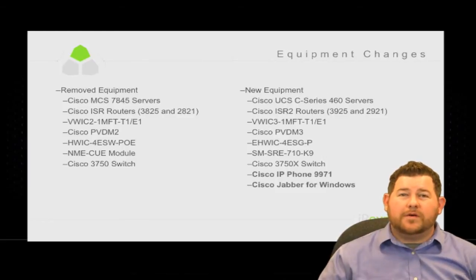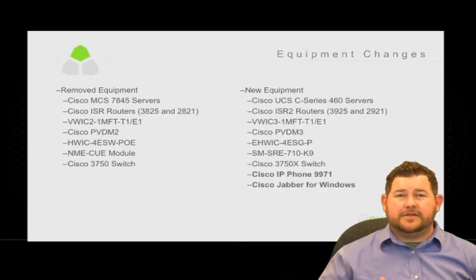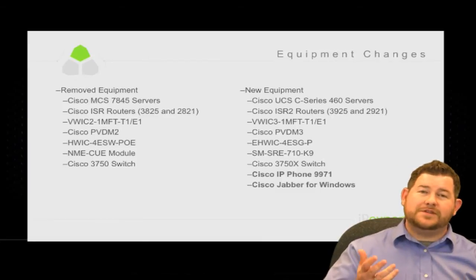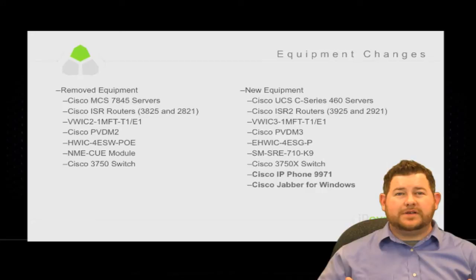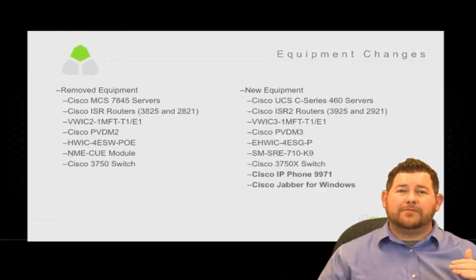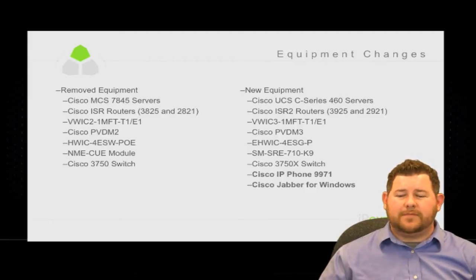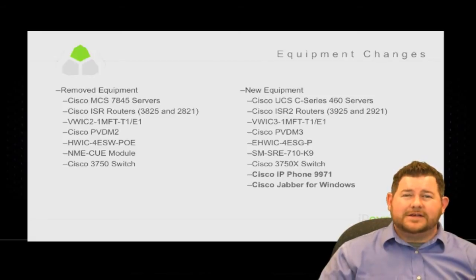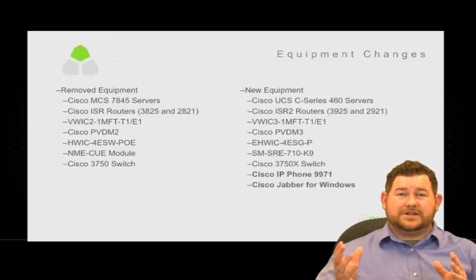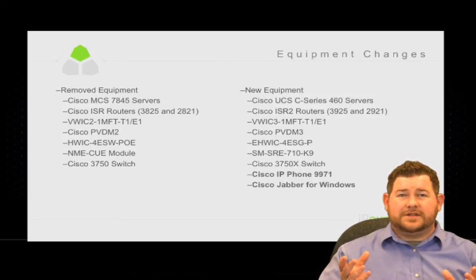Now for equipment changes — this is interesting because a lot of these are like-for-like swaps. Your MCS 7845 servers have been replaced with UCS C-Series servers — specifically the UCS C-Series 460. The difference is that one runs exclusively in VMware: you'll have your ESXi hypervisor on top of the C-Series 460, with all your virtual machines running within that ESXi server. Before, you had 7845 bare metal servers running call manager, your presence server, and Unity Connection directly. So it's server for server, and software-wise you're still talking about the same products — CUCM is still CUCM, just on a different server.